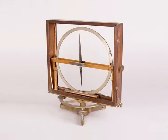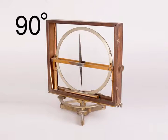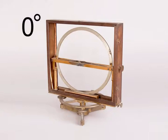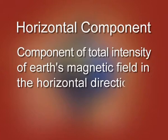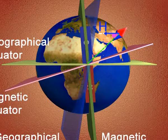At both poles, the angle of dip is 90 degrees. In the northern hemisphere, which contains the fictitious magnet's south pole, the needle dips downward. At the magnetic equator, the angle of dip is 0 degrees because the needle rests horizontally. The horizontal component is the component of total intensity of Earth's magnetic field in the horizontal direction in the magnetic meridian. It is represented by capital H.